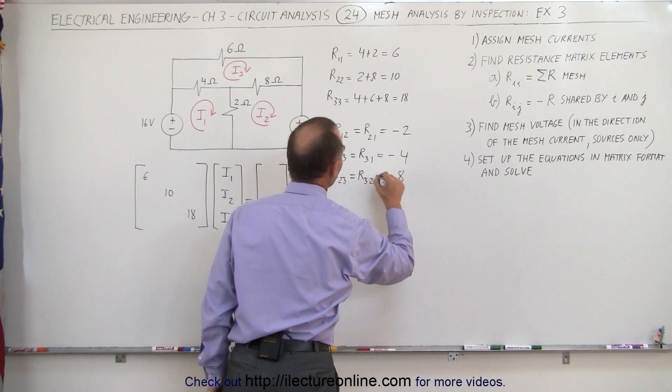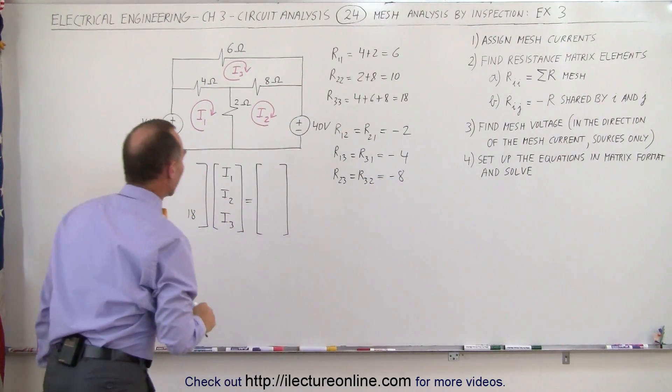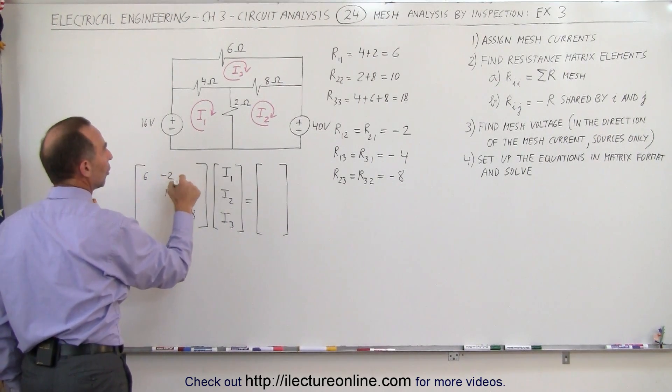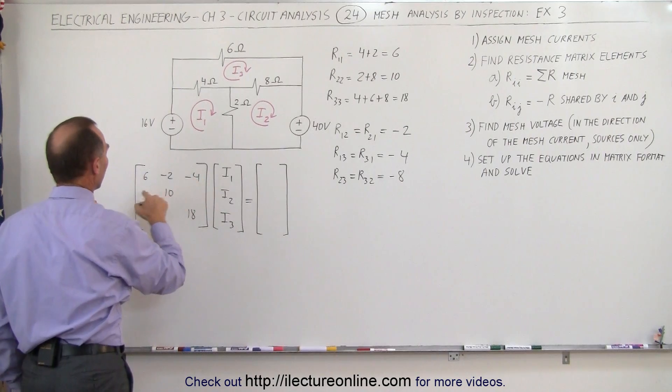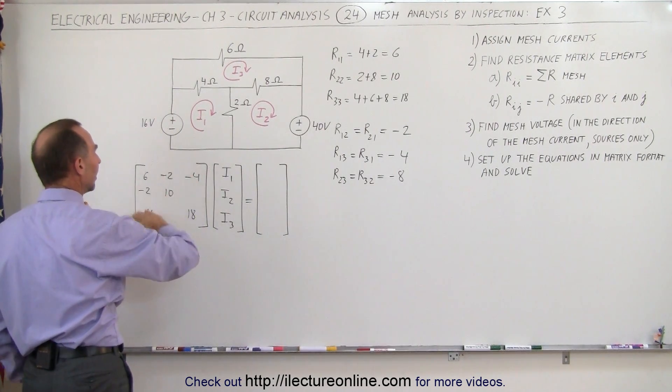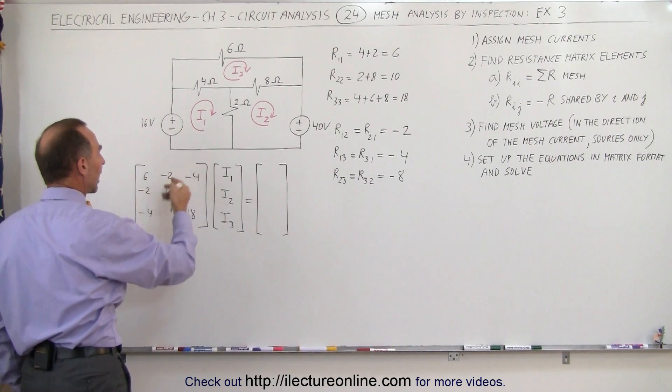So now we have to place those in the right location. So this is 1 and 2 and 1 and 3. 1 and 2 is a minus 2. 1 and 3 is a minus 4. 2 and 1 is a minus 2. And 3 and 1 is a minus 4. Notice that it's a mirror image across the diagonal.